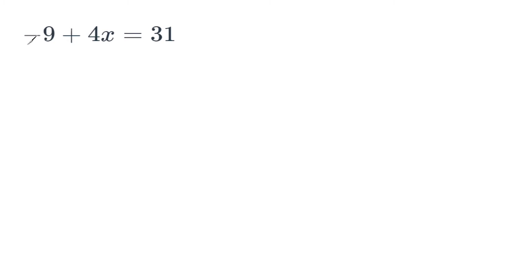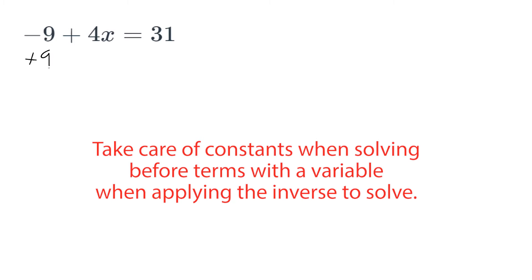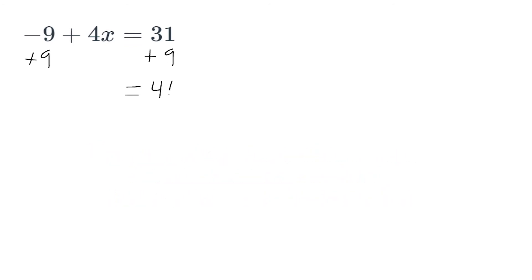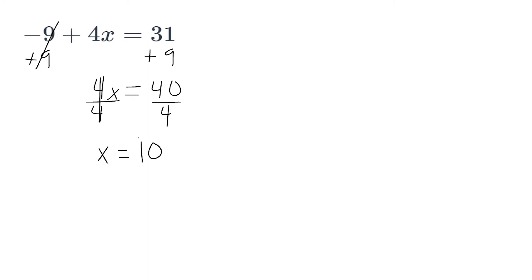Remember, when we have two terms — one that is a constant like this negative 9, and one that has a coefficient and a variable — you must take care of the constant first. So we do the inverse of negative 9, which is to add positive 9 to both sides. On the right we have positive 40, and on the left, after canceling opposite integers, we have positive 4x. To get rid of this coefficient, we divide it by itself to turn it into positive 1. Anything divided by itself is positive 1, and our goal is to get positive 1x. So we divide 4 by itself, and divide 40 by 4 to balance our equation, giving us x is equal to 10.